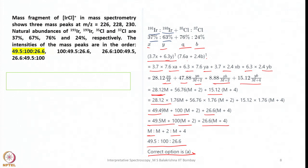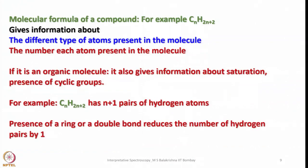Of course, if we have one isotope it is very easy. But if we have two atoms with different isotopes and different abundances, one has to go through these calculations. There may be even more complicated cases with three different types of isotopes. If I find more examples, I will come back with such examples at the end of this lecture series.